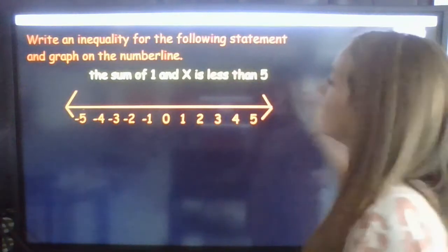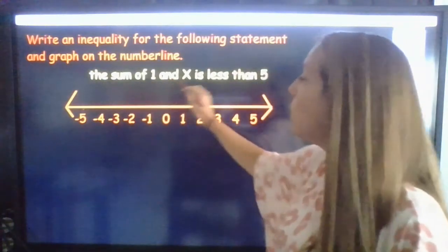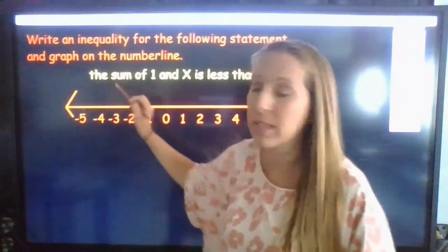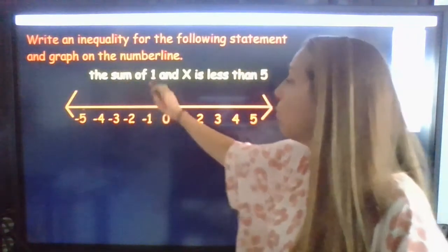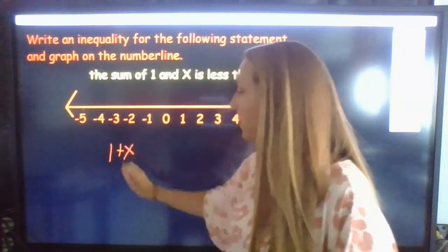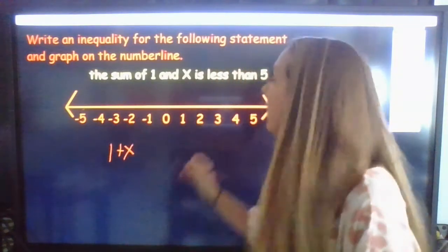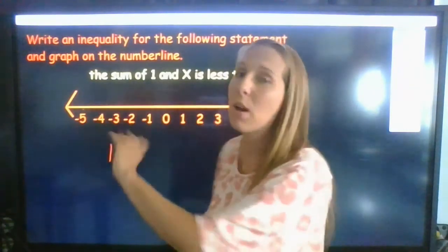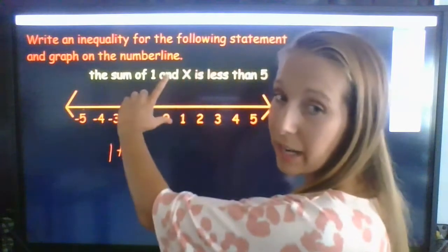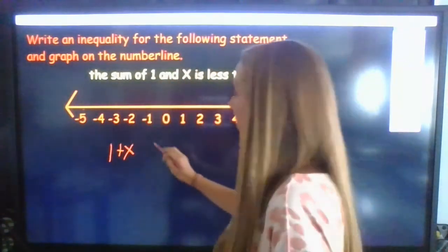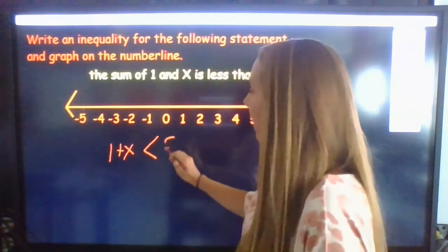It says the sum of 1 and x is less than 5. All right, so notice that the word sum is addition. So we're going to add 1 and x. So we have 1 plus x. Okay, so there's our sum. Then it says is less than 5. Now remember less than means it's getting smaller. Or you can think about your left hand. That's your less than sign. It forms an L, but it also forms your less than sign. So less than 5.